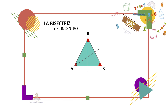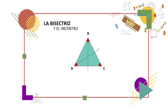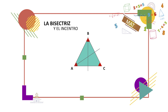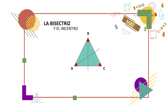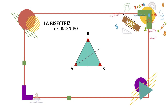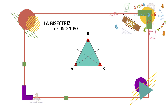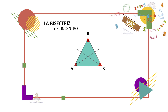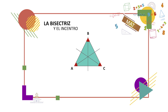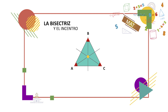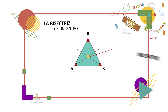Ahora trazamos la bisectriz para el ángulo B y colocamos marcas diferentes en los ángulos para distinguirlos de los anteriores, ya que no sabemos si tienen la misma medida o no. Lo que sí sabemos es que la bisectriz los ha dividido en partes iguales. Por último, trazamos la bisectriz para el ángulo C y nuevamente colocamos marcas diferentes en los ángulos para distinguirlos de los anteriores. Las bisectrices se han intersectado en un punto.